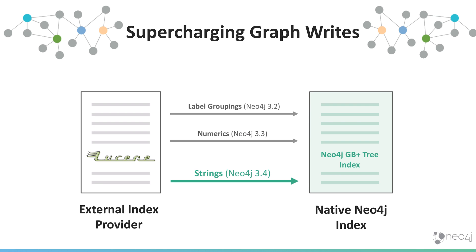So we've moved from using Lucene as our index provider to using our native Neo4j index. We've actually moved to a native index for our label groupings in 3.2, for numerics in 3.3, and now with string support in 3.4, we've added a lot of the common property types to the new native index. This is what results in our significantly faster performance on writes.